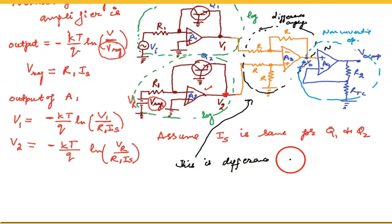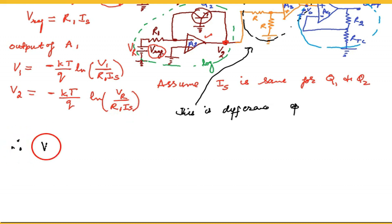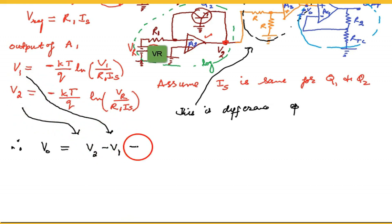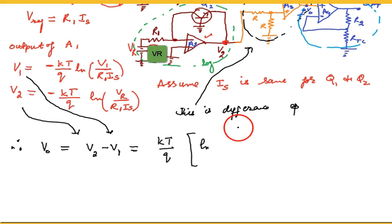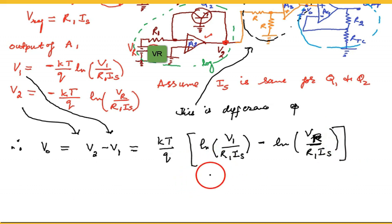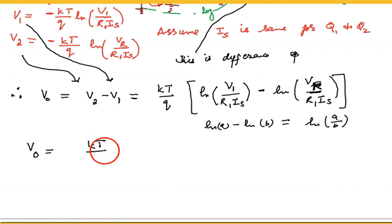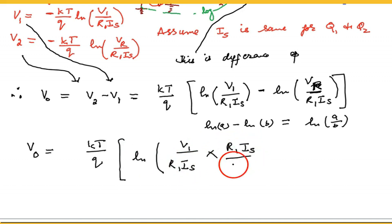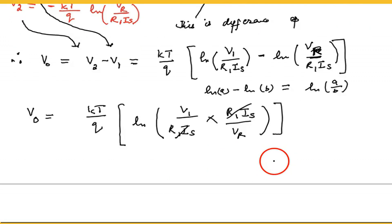The third op-amp acts as a difference amplifier and gives the difference of its two inputs V1 and V2, because it has equal resistors R at both the inverting and non-inverting terminals. So the output is simply V2 minus V1. Substituting and simplifying, using the identity that log(A) minus log(B) equals log(A/B), the output after the third op-amp becomes the logarithm of the ratio Vi over VR.